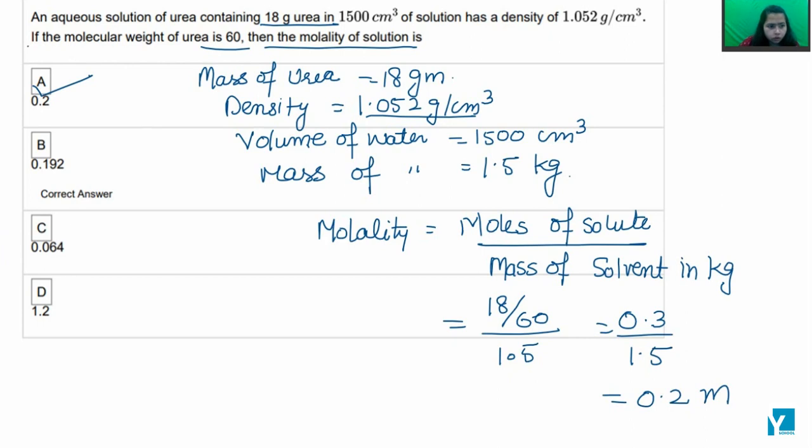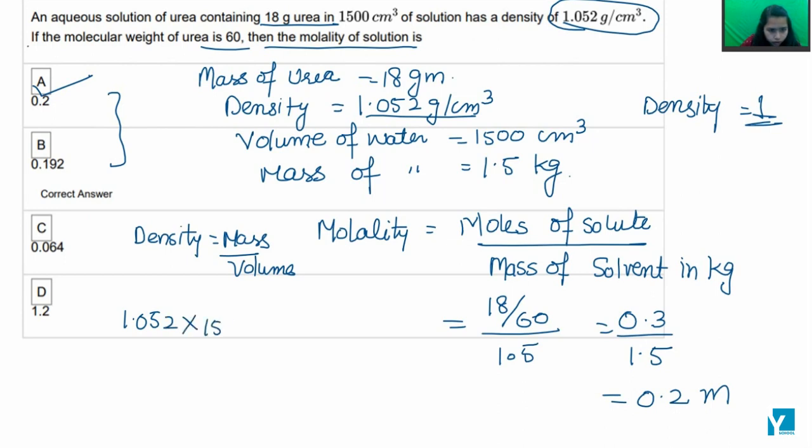However, the reason is that we have used the density of approximately 1 in our calculation because normally water is nearly 1. But here the density value is given. So if we calculate density equals mass by volume, we calculate the density value of 1.052 into 1500, so the mass comes out.